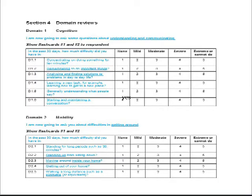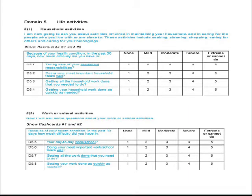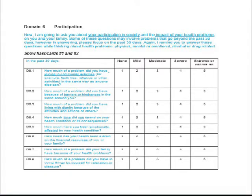The WHODAS is arranged in terms of domains. The first domain looks at cognition — how is the individual thinking, how is their memory? Then mobility — how well can they get around? Self-care — how well can they take care of themselves? Getting along with other people — social interaction. Life activities, which breaks into two separate domains: activities done around the house, and those done in school or at work. Finally, participation — how do symptoms affect the individual's ability to relate to others, to their own family, to participate in their own community, and to be a participating social being.